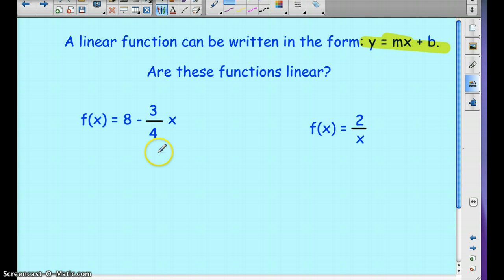So let's look at this first one, f of x equals 8 minus 3 fourths x. Is this a linear function? Yep, it sure is. Because it can be written as f of x equals negative 3 fourths x plus 8. We're multiplying by a constant here, and we're adding 8. So it works out.